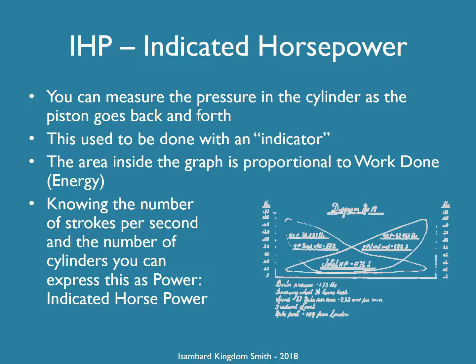The graph shows two loops because the cylinders are double acting — steam acts on both sides of the piston.